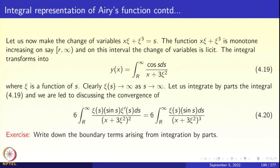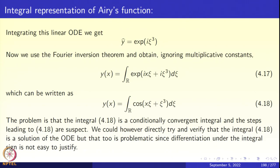Direct verification is going to be problematic. So let us make a transformation. First, let us discuss whether the integral 4.18 even converges conditionally. We will first prove that it is conditionally convergent. After that, we will convert this conditionally convergent integral 4.18 into an absolutely convergent integral, and verify that the transformed integral satisfies the Airy equation. That is the plan of today's lecture.